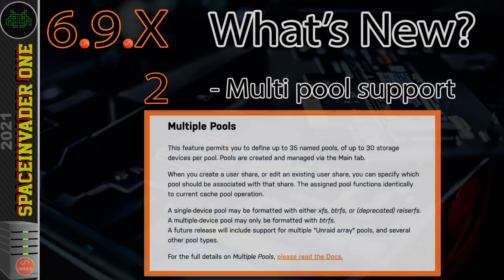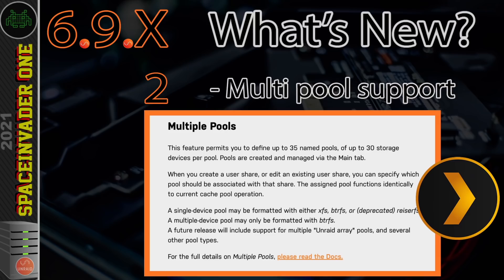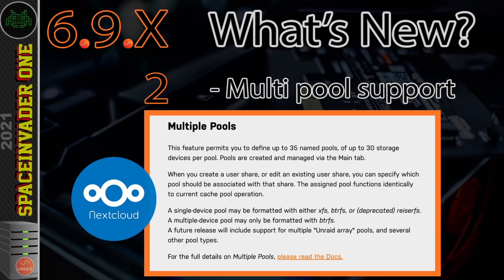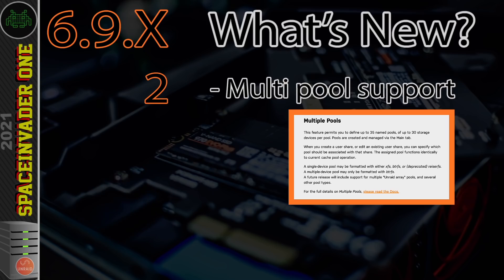Now in Unraid 6.9, we can create multiple different pools, which brings loads of different possibilities. You could have a separate pool for storing VM images, another pool for Plex metadata, and you can set different shares to use a different cache pool for accelerated writes. This is really useful when running something like Nextcloud — you can set up a dedicated cache pool, maybe fast NVMe drives, to accelerate writes with their own cache for that particular share.